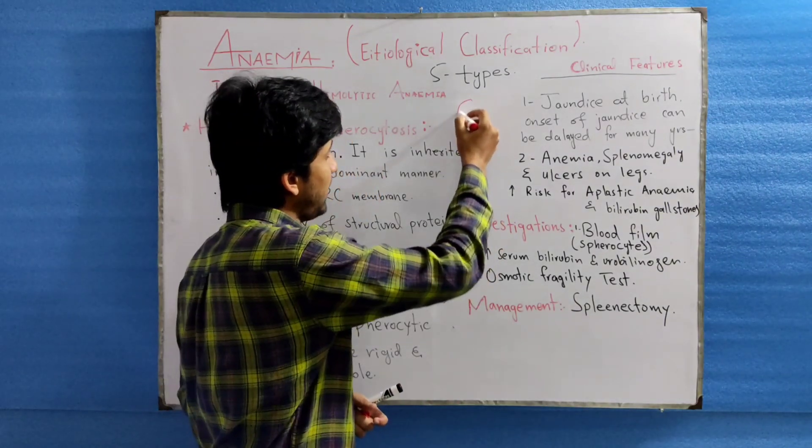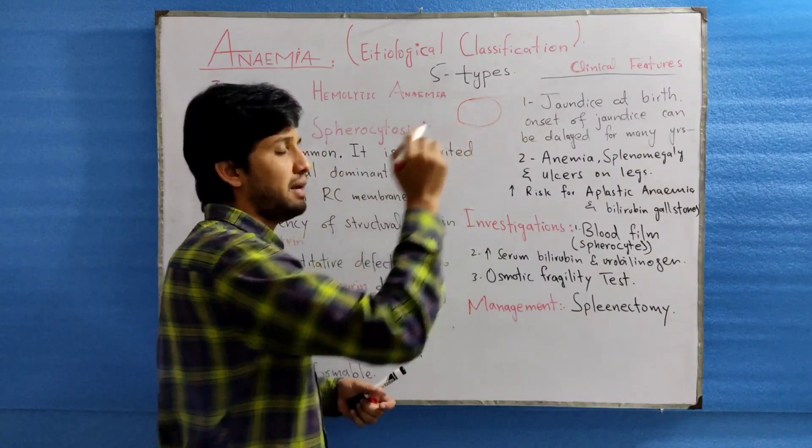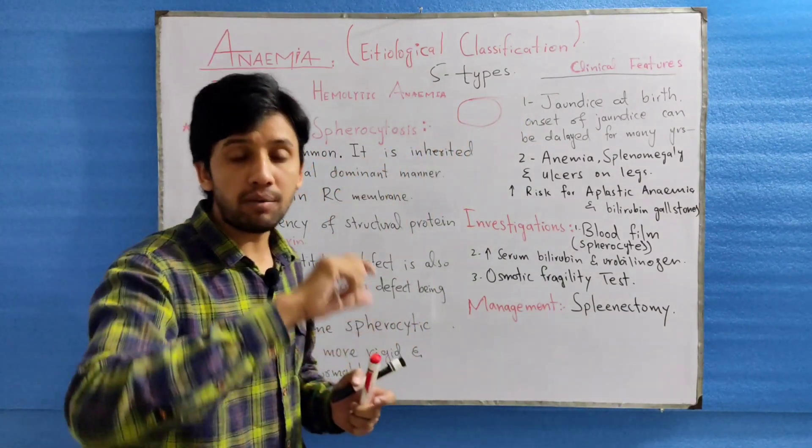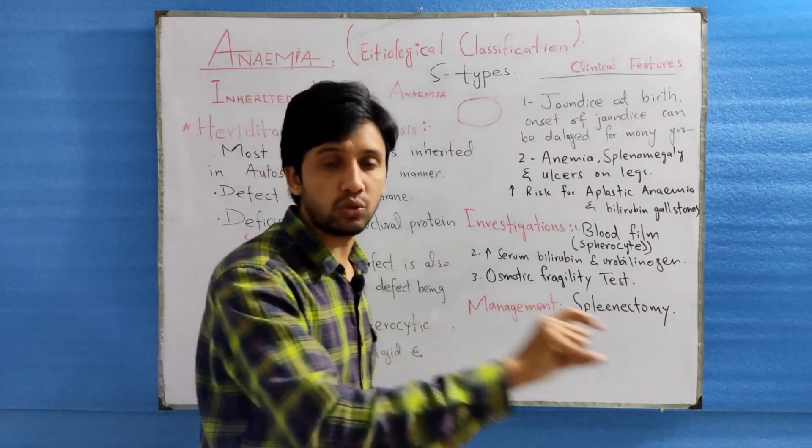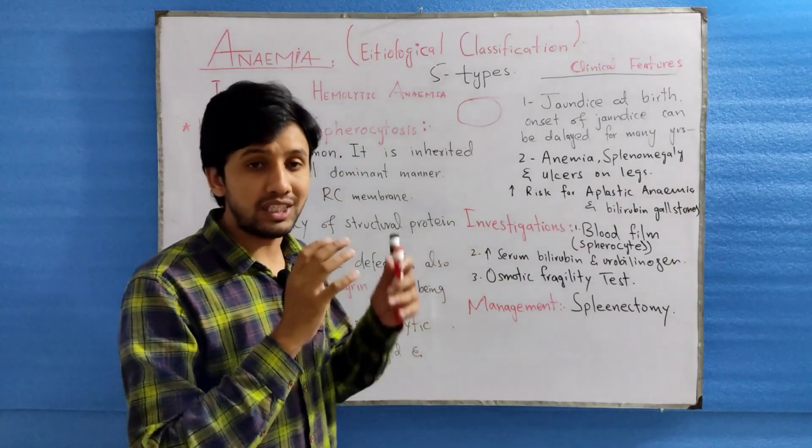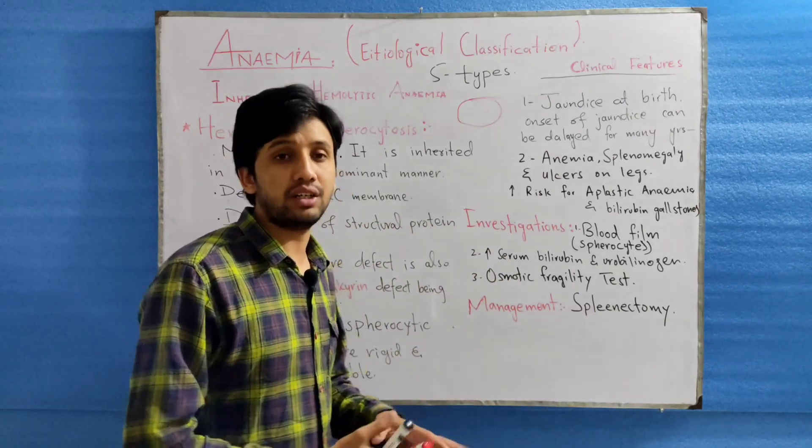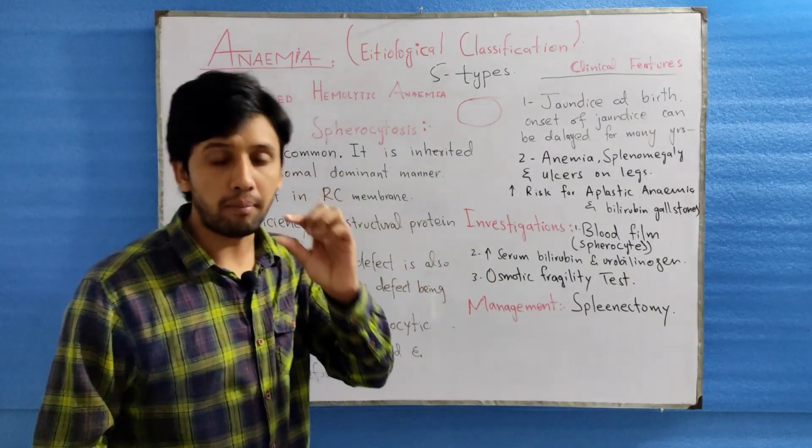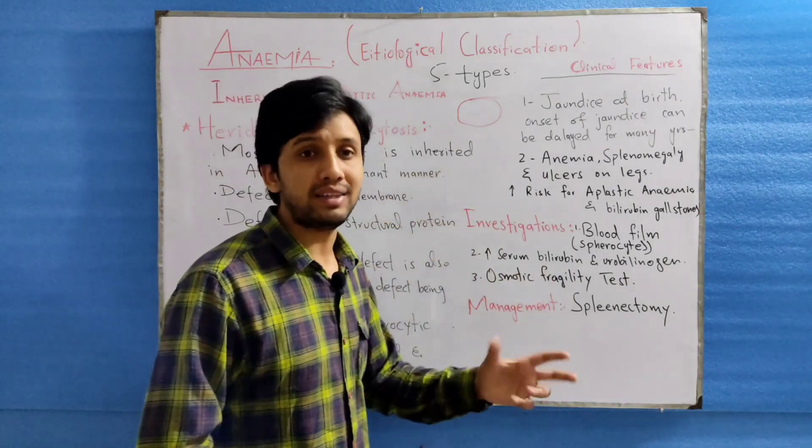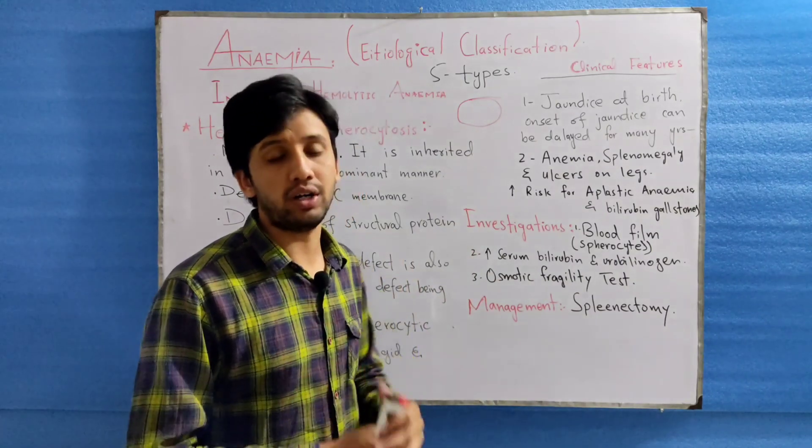HS is a defect in the cell membrane and this cell membrane is losing some of its part while passing through the spleen. These cells are more rigid and spherocytic in nature and they cannot pass through the microcirculation of the spleen. That's why they have a very short lifespan.